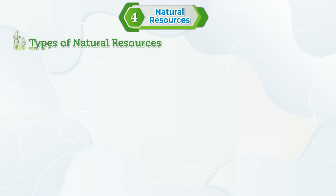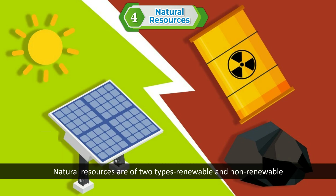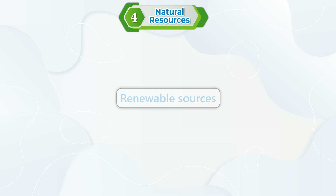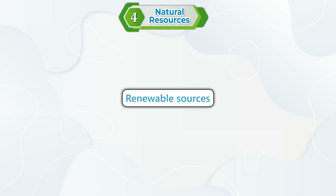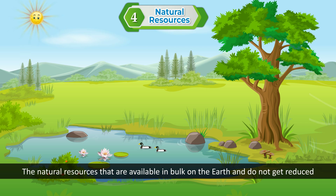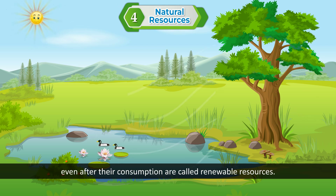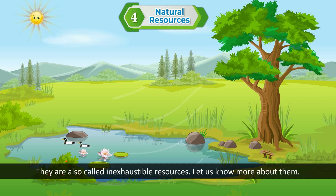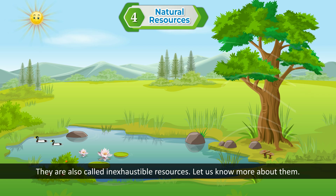Types of Natural Resources: Natural resources are of two types — renewable and non-renewable. Renewable resources are the natural resources that are available in bulk on the earth and do not get reduced even after their consumption. They are also called inexhaustible resources.